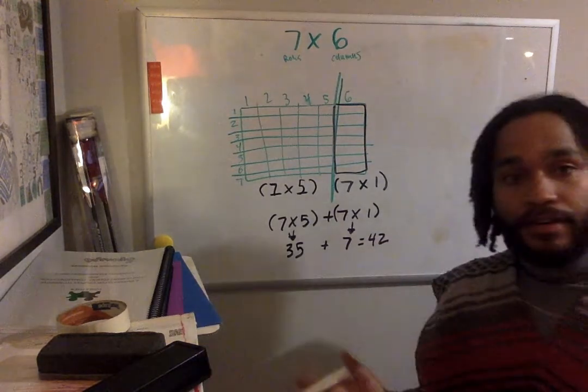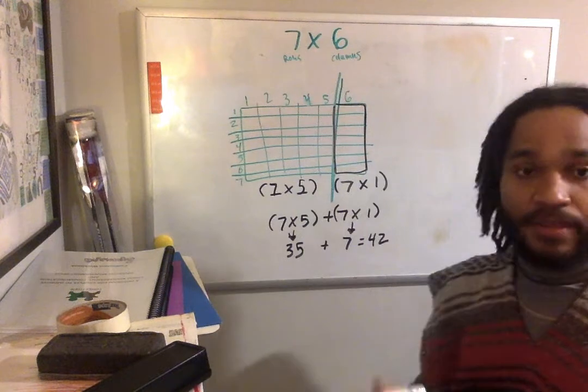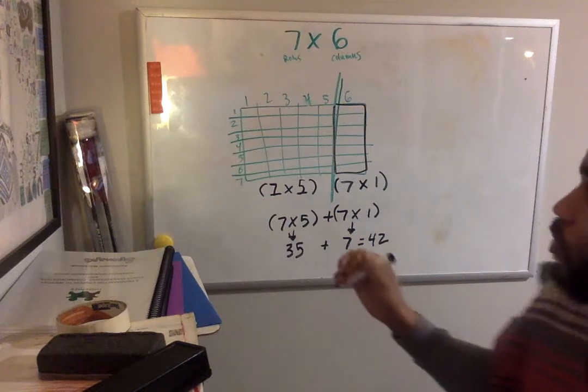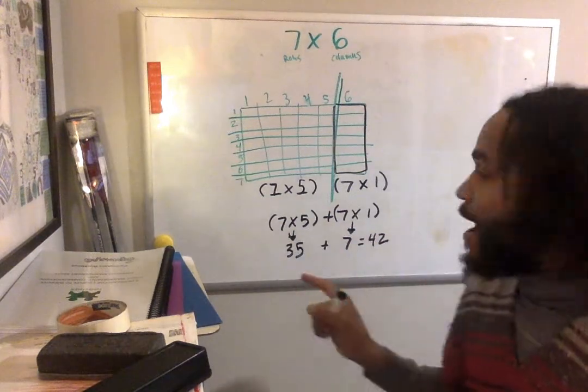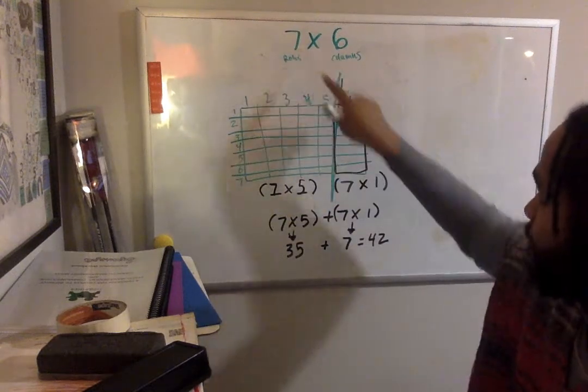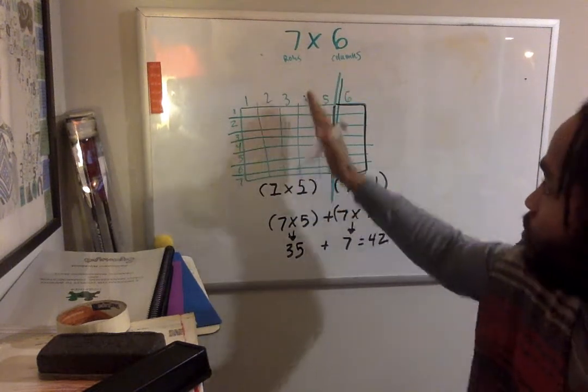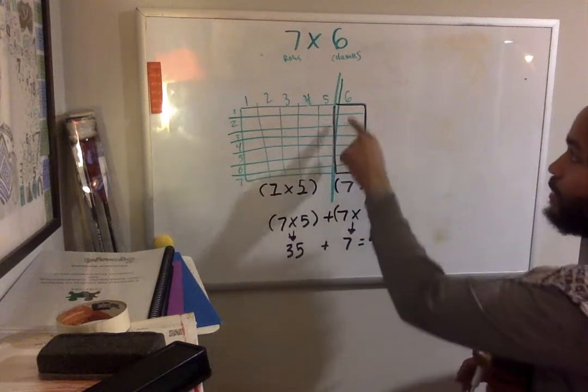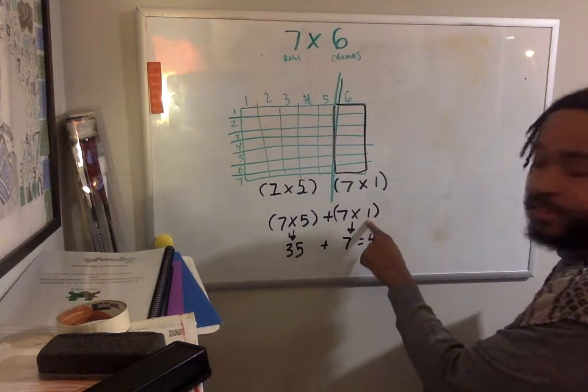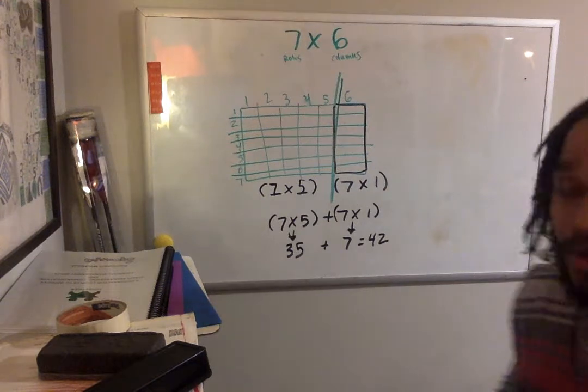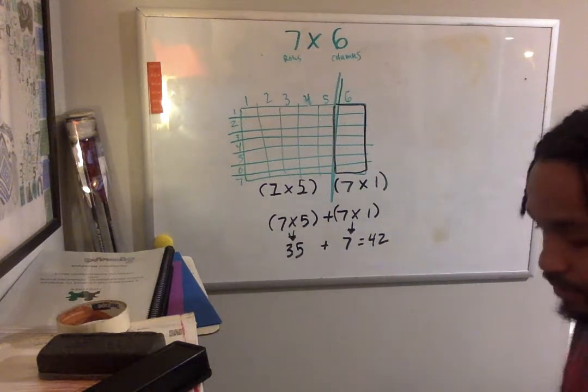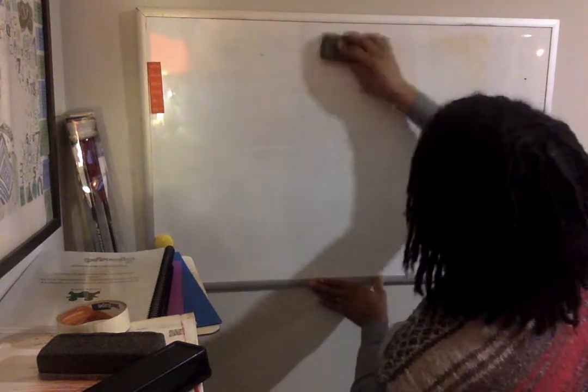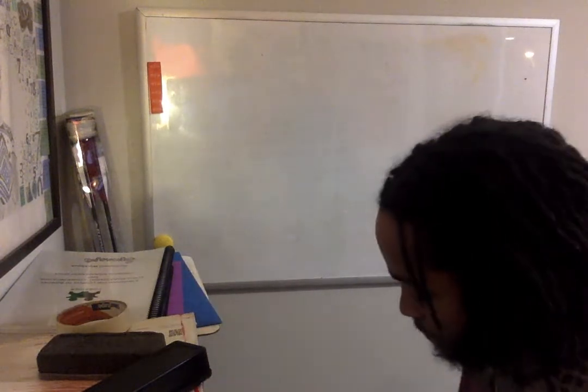All right. Now, some of you might know what seven times six is. I'm going to show why this strategy is good when there are larger numbers. And I don't know if you notice as well, we only broke apart one of the factors. This seven remained the same in both equations because we broke up those six columns. We broke it up into five columns, which is a five right here, that second factor. And we broke it into one column over here, which that one represents over here. So watch this example. It's a little bit bigger. You can actually pause it after I do it to see if you can do it on your own.